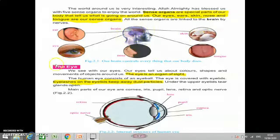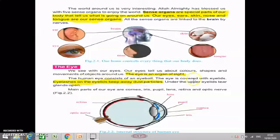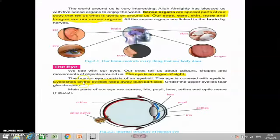Next topic is the eye. In this topic we will study about the structure, internal structure of eye, and the parts of eye and their function. We see with our eyes. Our eyes tell us about color, shape and moments of objects around us. The eye is an organ of sight. Eye is an organ of sight means the eye helps us to see. The human eye consists of an eyeball. The eye is covered with eyelids. Eyelashes on the eyelids keep away dust particles. Eyelashes present on the eyelids help to remove dust particles. Under the upper eyelids, tear glands are present. Tear glands are present inside the upper eyelid.